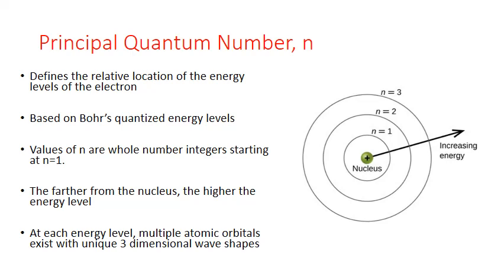Bohr's energy levels worked for the hydrogen atom, which only had one electron, but failed to describe the energy differences observed in atoms that contain more than one electron. The quantum mechanical model does describe what happens in these multiple-electron atoms, because it indicates that at each of these energy levels, multiple atomic orbitals exist with unique three-dimensional wave shapes. The next two quantum numbers describe these three-dimensional wave shapes found at each principal energy level.